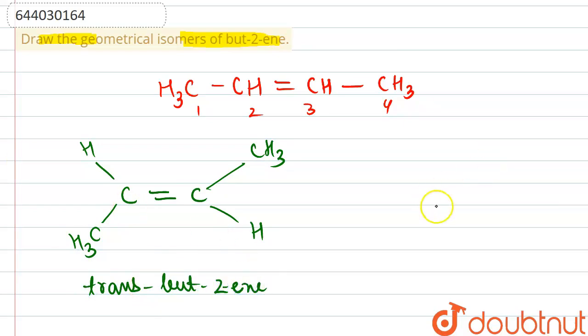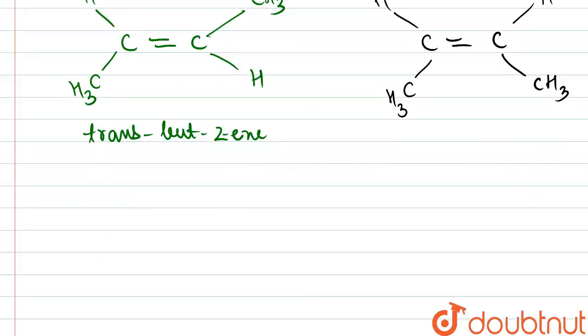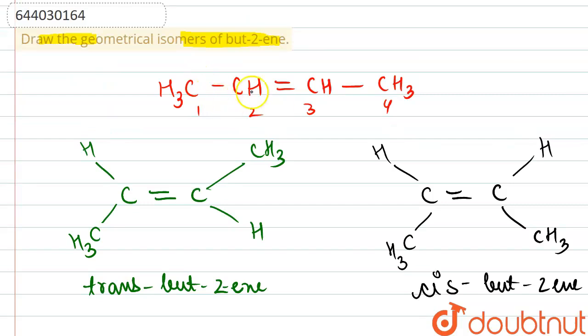And the second possible one is the same substituents on the same side. Methyl, methyl, hydrogen, hydrogen. Okay, so this will become cis but-2-ene. So these are the only two possible geometrical isomers for this.